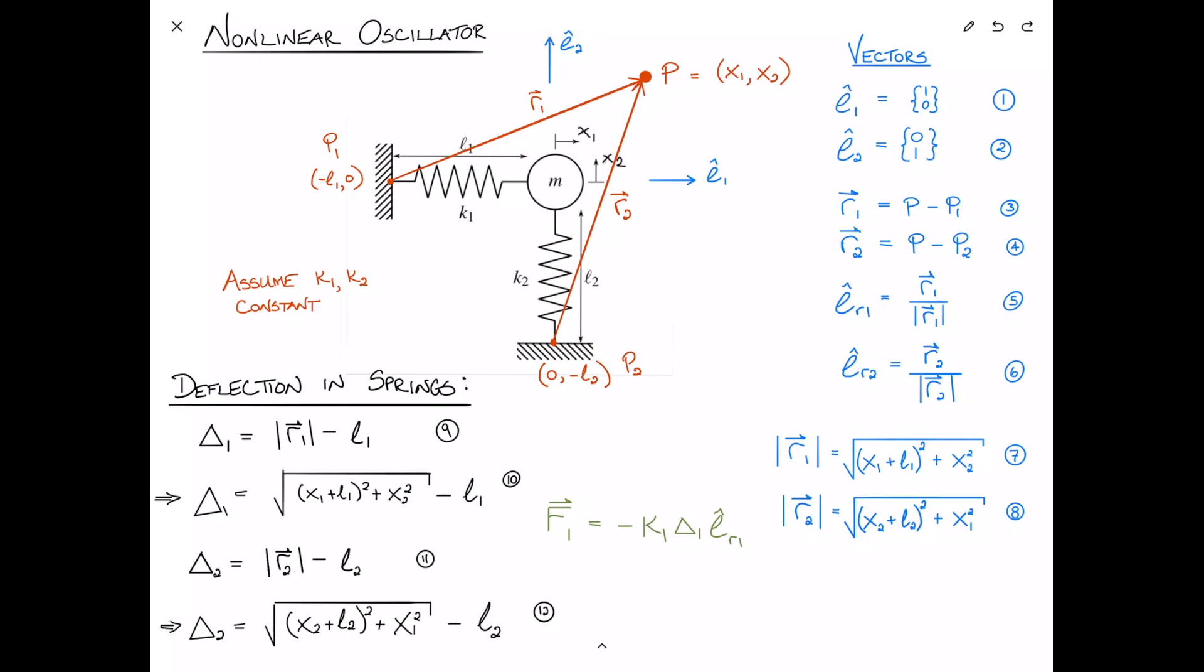Similarly, F2, the force in spring 2, is minus K2 delta 2 in the negative ER2 direction. So we know that the spring forces act in this direction in the case of each spring. And all that we need to do to find the spring force in the E1 and the E2 direction is just take the dot product. Nothing could be simpler. So let's put a box around these.